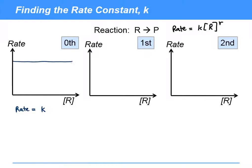So our plot is going to look like that and the rate all the way through is K. Rate equals K, so we can simply read off K from the graph.